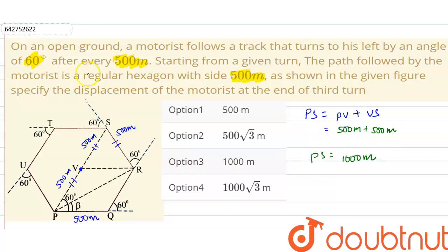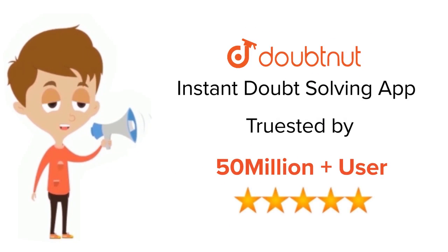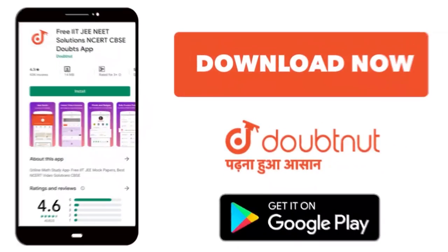So the correct option for us is option number three, that is 1000 meters. Thank you. For class 6th to 12th, IIT-JEE and NEET level, trusted by more than 5 crore students. Download Doubtnet app today.